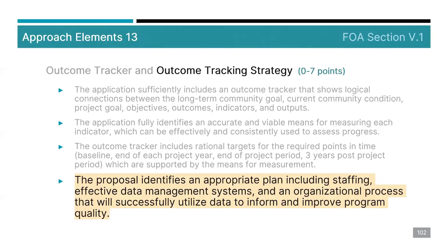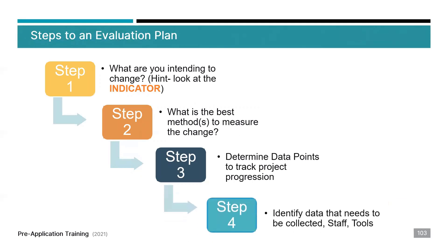The last element under the Outcome Tracker is specific to the Outcome Tracking Strategy. The proposal identifies an appropriate plan, including staffing, effective data management systems, and an organizational process that will successfully utilize data to inform and improve program quality. Step four is to identify the data that needs to be collected, the steps, and the tools necessary. Provide details of the evaluation plan: what data will be collected, how often, and by whom. Identify the tools necessary — any assessments, scales, software, or computers. Include how the data will be stored, especially if it is sensitive personal information, and detail how you will keep it confidential.